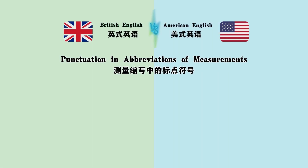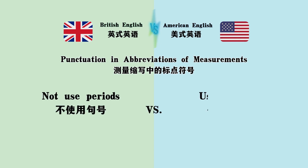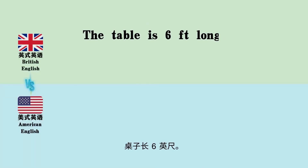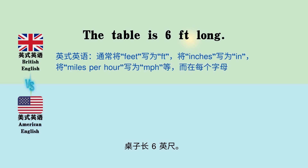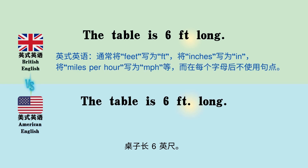Punctuation in abbreviations of measurements: not using periods versus using periods. 'The table is 6 feet long' — shown in both styles.